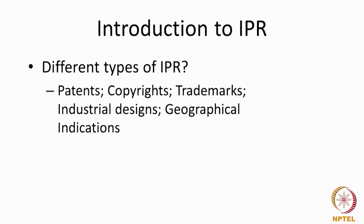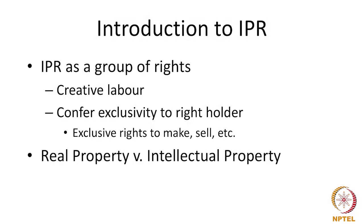Even the ways in which infringement is proved are different across the different kinds of intellectual property rights. What holds these rights together? Why are they regarded as a group of rights studied together? One predominant classical explanation is that these rights came out of some form of creative labor — something understood as being different from physical labor. When creative labor resulted in certain rights, those rights could be captured by these regimes.